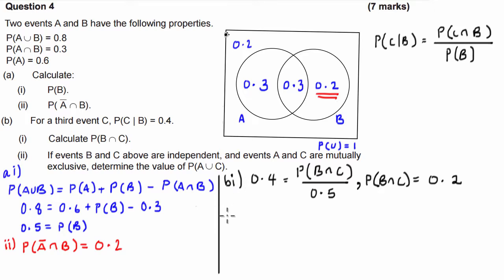Okay, changing colours again. We have B, I, I. Now, what is it asking us? If events B and C above are independent and A and C are mutually exclusive, determine the value of the probability of A union C. Okay, well, let's just start with this mutually exclusive part. So if two events are mutually exclusive, what this means is the probability of it being in A and it being in C is equal to 0.